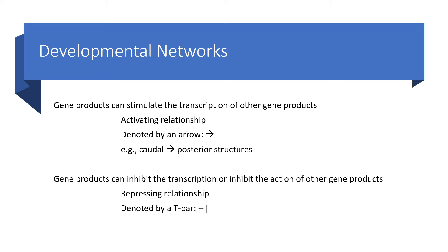Gene products which stimulate the transcription of other genes are activating relationships, and we can denote them using an arrow. An example of this in developmental biology is the caudal gene, which stimulates the production of posterior structures. Gene products can also inhibit transcription or the actions of other genes. These are repressing relationships, and we can denote them using a t-bar.